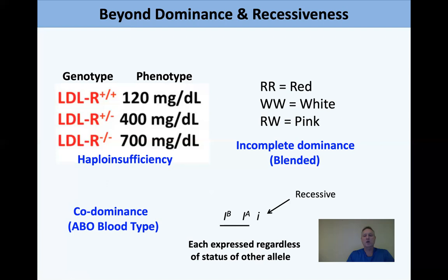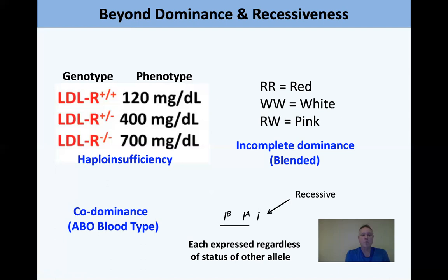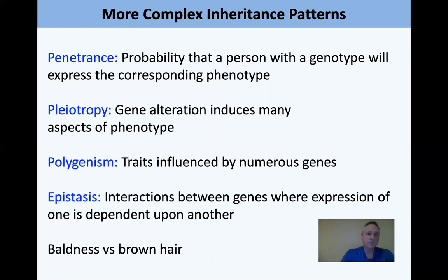Just because you're plus-minus doesn't mean you'll always look like plus-plus. There's also incomplete dominance — the classic example is red and white flowers producing a pink heterozygous state. There's also codominance, classically the ABO blood type system. On red blood cells you can express the B antigen, A antigen, or no antigen. The O allele is recessive to A and B, but A and B are each expressed regardless of the other allele's status — that's codominance, not classic dominance and recessiveness.